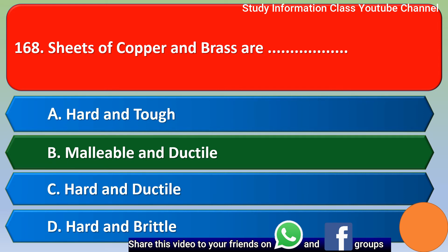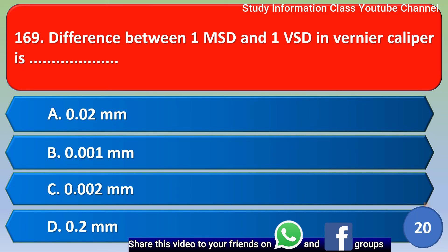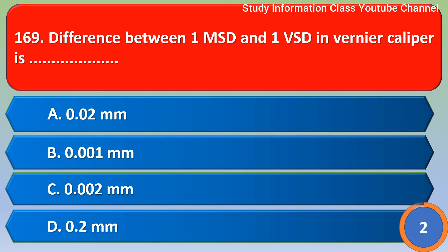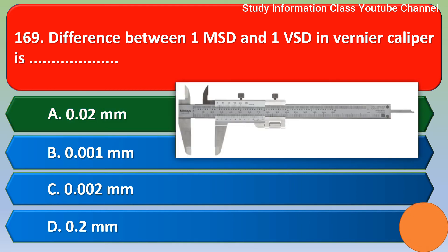Next question: the difference between 1 MSD and 1 VST in a vernier caliper is — with four options given. The correct answer is Option A — 0.02 mm.